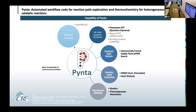A powerful function of PINTA is that it can generate chemically sensible transition state guesses using a novel method called the Harmonically Forced Saddle Point Search Method, or HFSP, which I will discuss later. In addition, PINTA has the capability to do coverage-dependent pathway exploration with uncertainty quantification to build kinetic and thermodynamic parameters. We are also implementing machine learning for optimization of initial adsorbate guesses using DeepMD-kit.